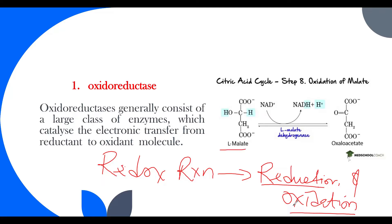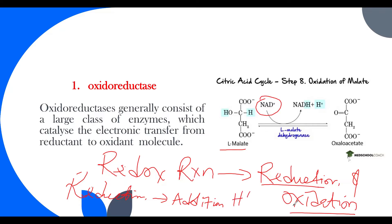Here we have malate and NAD+. Reduction can simply be described as the addition of hydrogen, while oxidation is the removal of hydrogen. Here, hydrogen is being removed from the substrate.